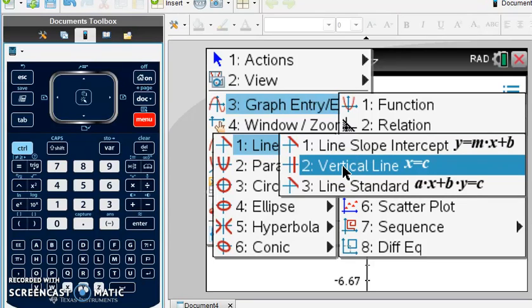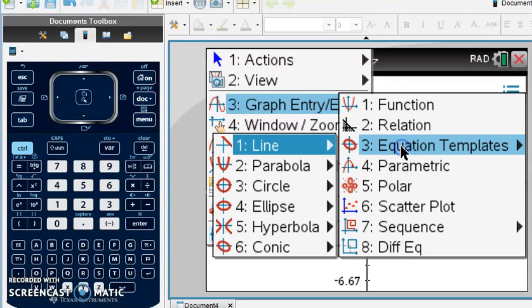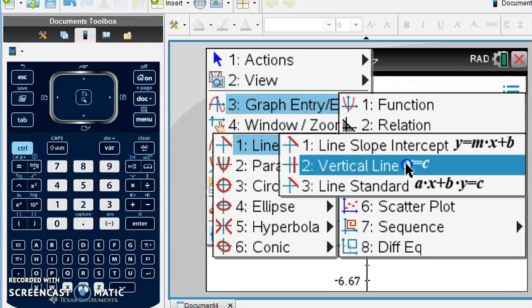So you have to go into your table, under menu, 3, I'll go back through it, 3, equation templates, line, vertical line.